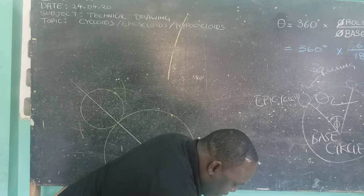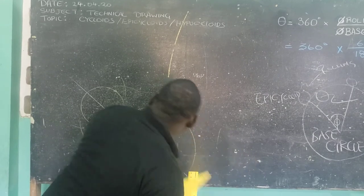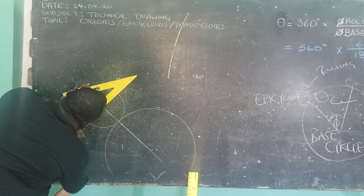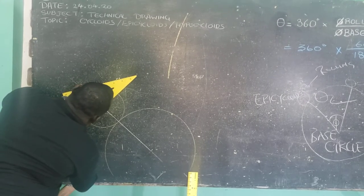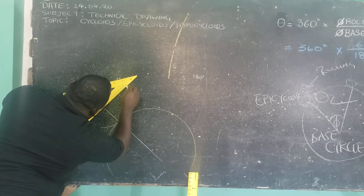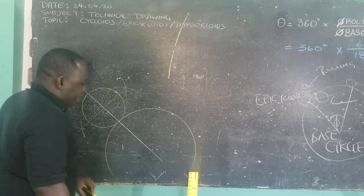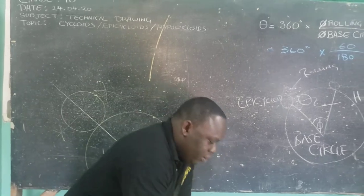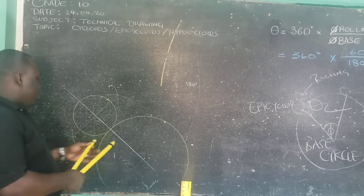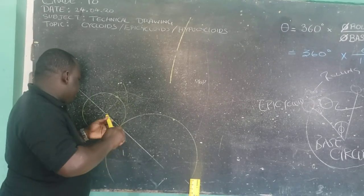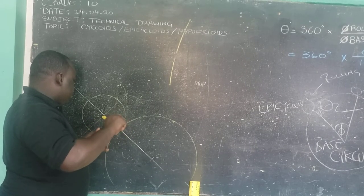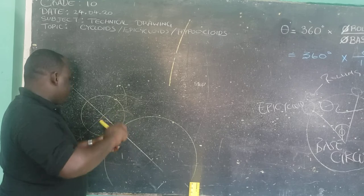Once we have located the center, we can proceed by dividing our rolling circle into 12 equal parts. To bisect your circle into equal parts, you need the radius of the circle — you can use your compass as well as your 60-30 set square.